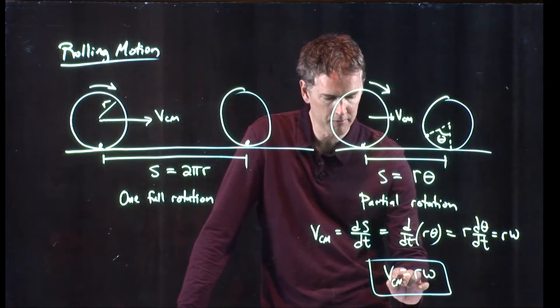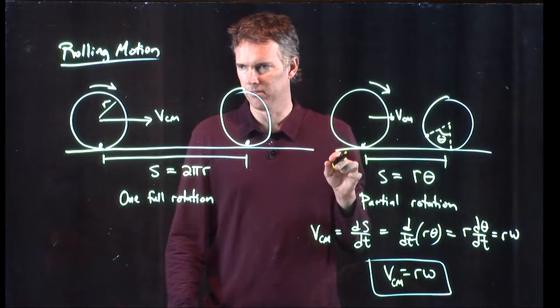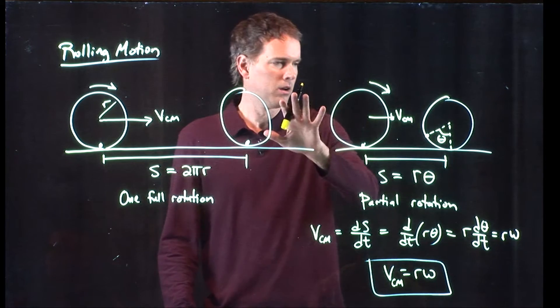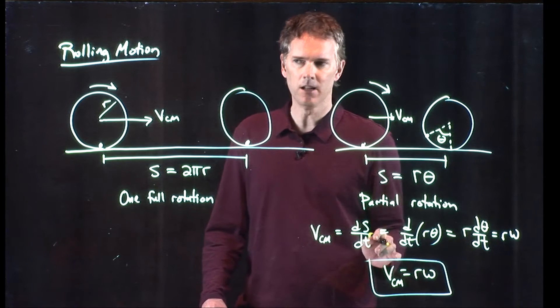Specifically, this v is the velocity of the center of mass. If I look at the center of mass of the wheel, which is right in the center of the wheel, what's it doing? It's rolling along with speed v_cm.